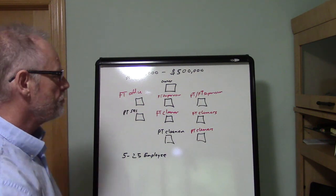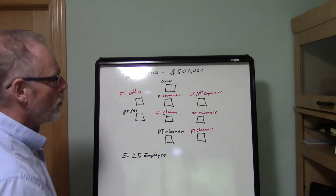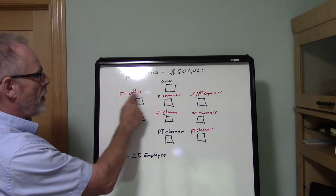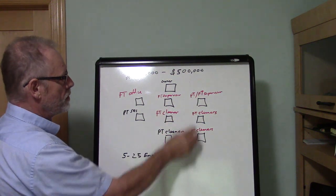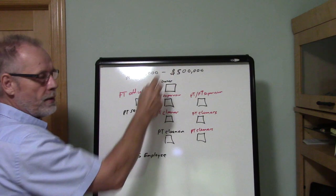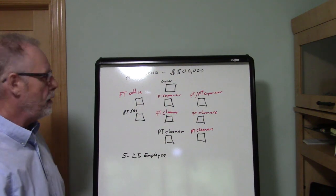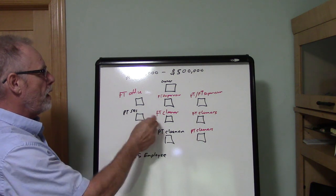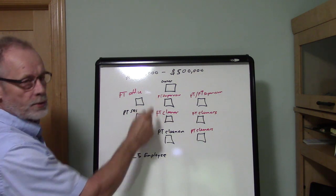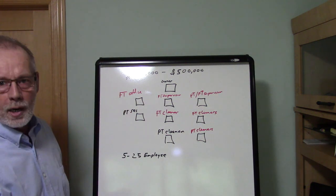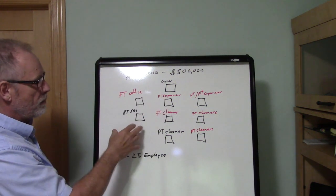For a company that wants to go to the $500,000 in revenue mark, that means they're going to expand into the red areas here. These are the additional positions that you would have to have in order to generate that kind of income and take care of the client. You have the owner, you'd have your part-time cleaners, but now you're going to have to bring on some full-time cleaners, a full-time supervisor, more than likely a full-time office person.